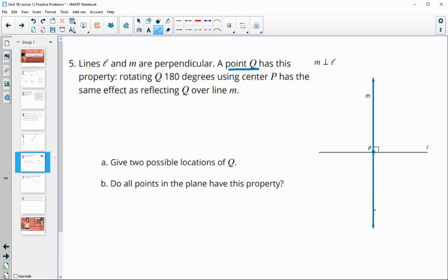The same effect as reflecting Q over line M. So picking a couple possible locations. We looked at this in the practice prompts from the previous lesson. If we put a point here and reflect it, it's going to end here. But rotating 180 would end it down here. So putting something in kind of this quadrant here is not going to work. So let's look at down here. So we put it here and we reflect. It's going to go this way. And then a 180 degree rotation is going to send it here. So that's not going to have the same effect.